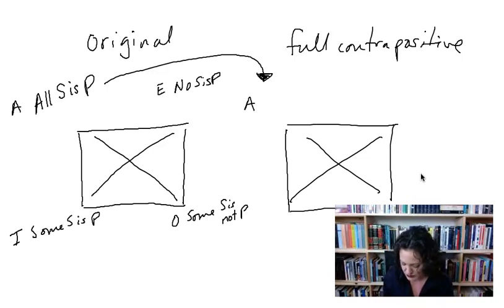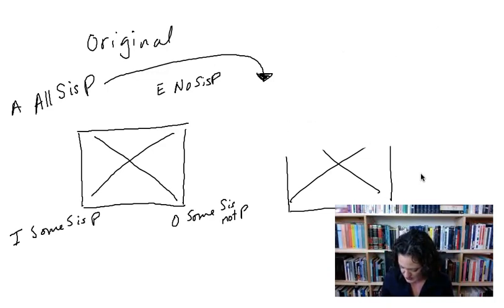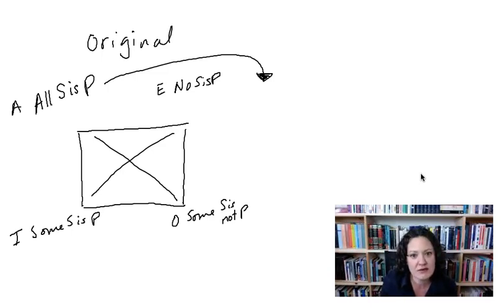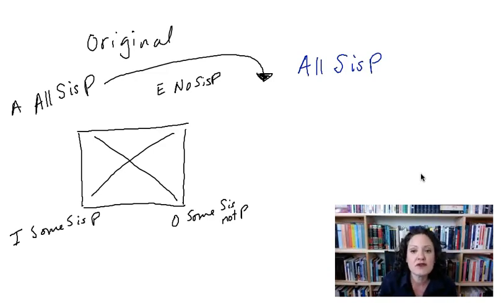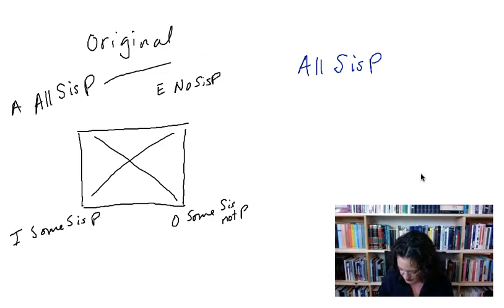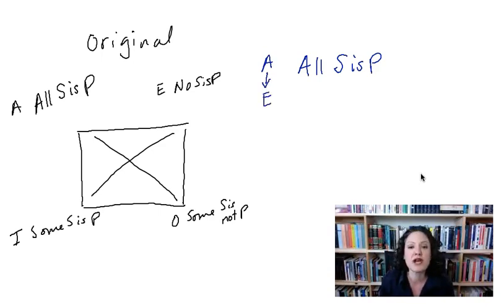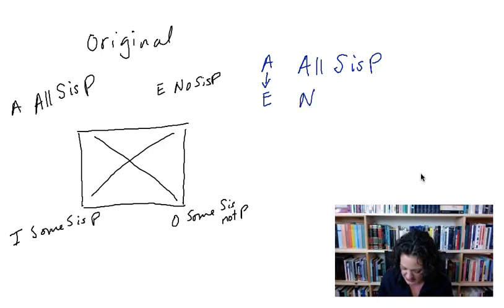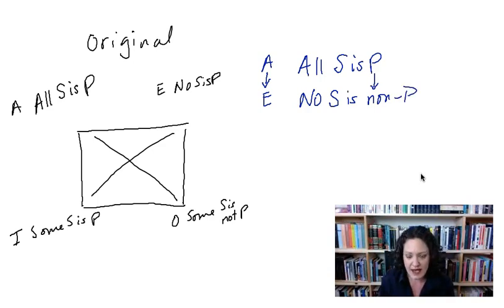Okay, so you have your original square all labeled. I'm going to show you the steps. Here is my A statement: 'all S is P.' The first thing I'm going to do is obvert this statement. If you recall the rules of obversion — this is an A statement, and A obverts to E. When we obvert we keep the quantity and change the quality. It's affirmative, so now it's going to be negative; S stays, 'is' stays, but now we negate the P term. So now we have 'no S is non P.' That is obversion.